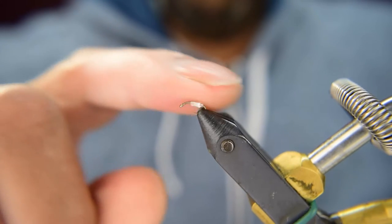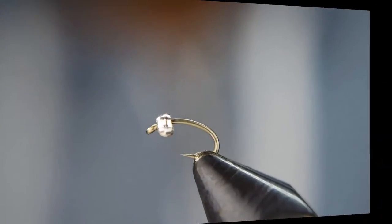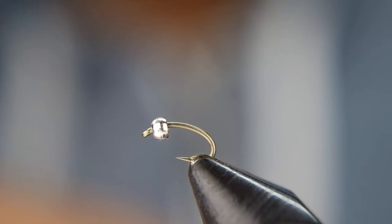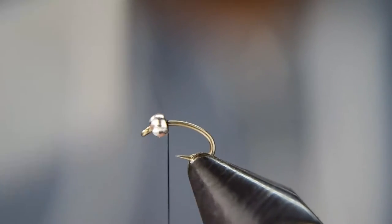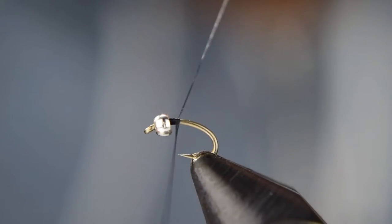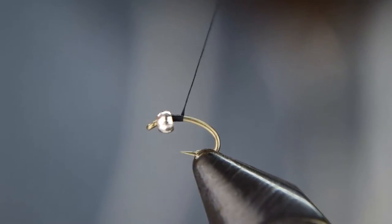All right, let's get started with this fly. So we got our bead on our hook here, we have the hook in the vise. We're going to go ahead and start the thread right behind the bead. Then we're going to go ahead and cut off the tag and wrap back a little bit.